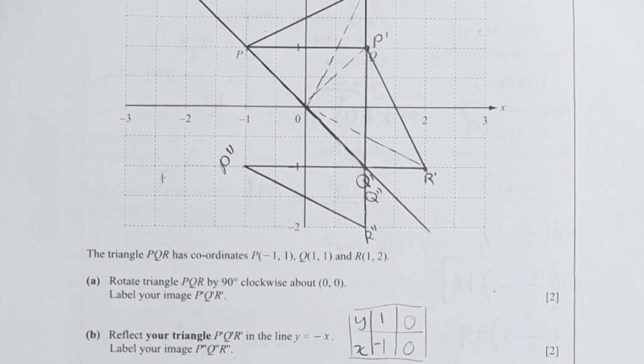And when y equals negative x, this one is actually the line I drew over there. So when they reflect, it will look at the shape over there.